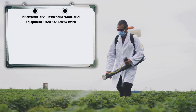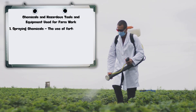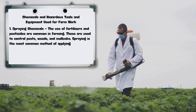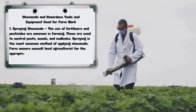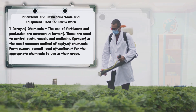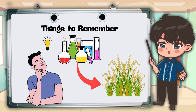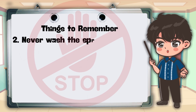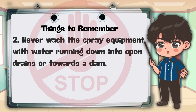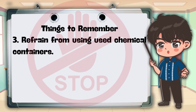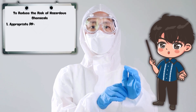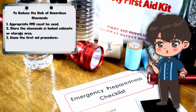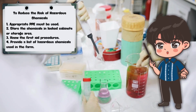Here are the chemicals and hazardous tools and equipment used for farm work. 1. Spraying chemicals — The use of fertilizers and pesticides is common in farming to control pests, weeds, and mollusks. Farm owners consult local agriculturists for appropriate chemicals. Important reminders: do not spray if there is a strong wind directed toward a body of water or a house; never wash spray equipment into open drains or toward a dam; refrain from using used chemical containers. To reduce risk: use appropriate PPE, store chemicals in locked cabinets, know first aid procedures, and provide a list of hazardous chemicals used in the farm.